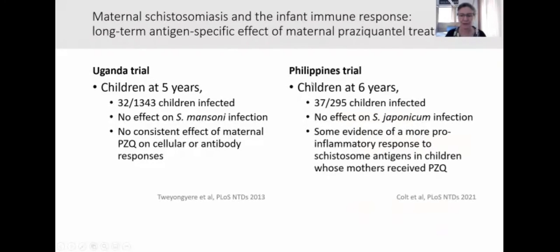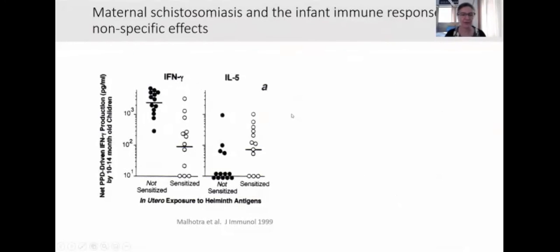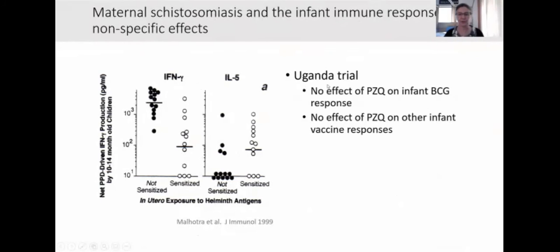Similarly, in the Philippines, they looked at children at six years — again very few infected — and found no evidence of an effect of maternal treatment on schistosomiasis infection. There is some evidence in the Philippines study of a more pro-inflammatory response to schistosome antigens in children whose mothers received praziquantel. Earlier work by Malhotra and colleagues showed that infants sensitized in utero to worm antigens had reduced gamma interferon and increased IL-5 responses to their BCG vaccination. But in the Uganda trial, we found no effect of praziquantel on infant BCG responses or on other infant vaccine responses. We did, however, see an effect of praziquantel treatment of the mothers on the infant rates of eczema, with more than double the rates of eczema in the children of mothers who were treated — and this was restricted to children of mothers who had schistosomiasis.